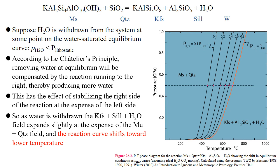So as water is withdrawn, the K-feldspar plus sillimanite plus water field expands slightly at the expense of the muscovite plus quartz field, and the reaction curve shifts towards the lower temperature. Figure 26.2 shows the calculated shift of the partial pressure of the water for values of 0.08, 0.06, 0.04, 0.02, and 0.1 times the lithostatic pressure.